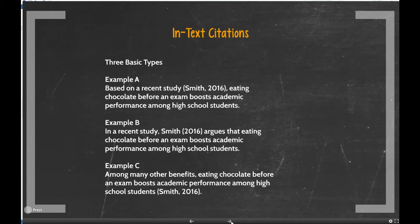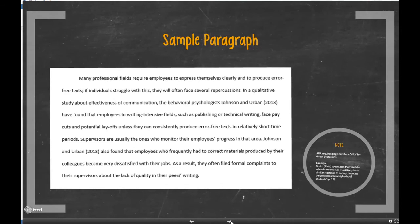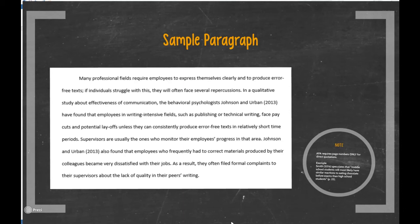Let me show you an example of a paragraph where Examples A and B are most likely to appear. Feel free to pause to read through it. You'll notice one source is cited here — Johnson and Urban (2013), two authors — and in both cases the authors are actually part of the sentence rather than just placed in parentheses. Also note that the writer cites them twice in the paragraph.